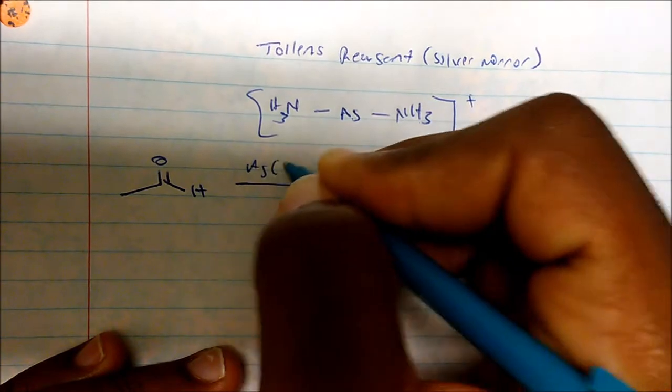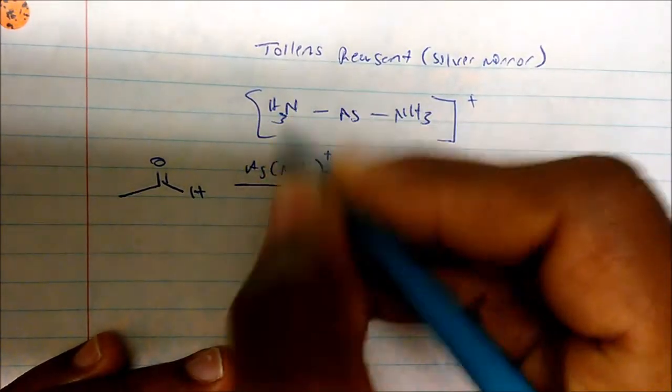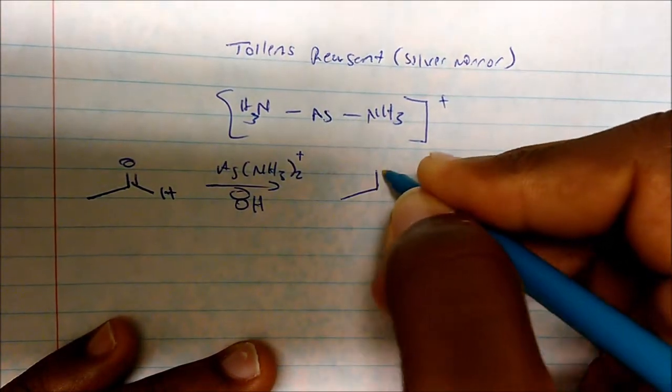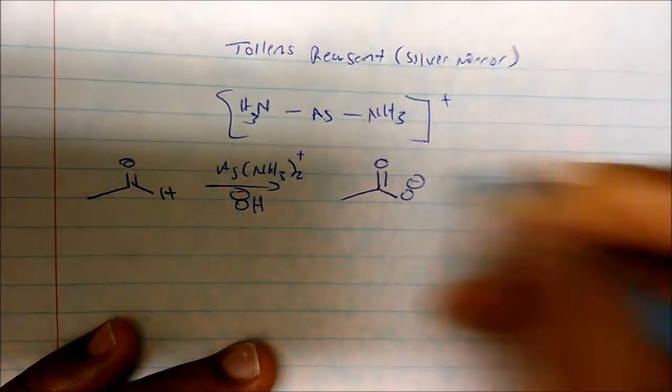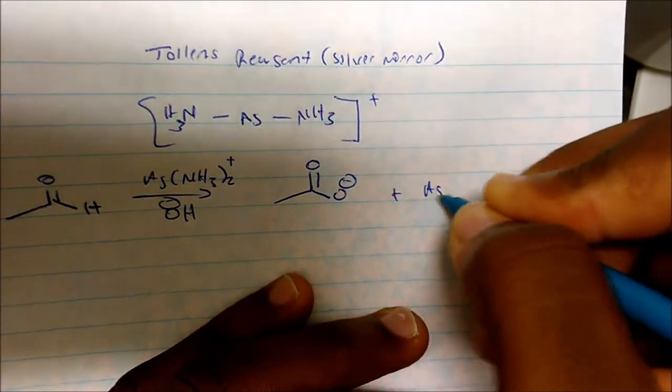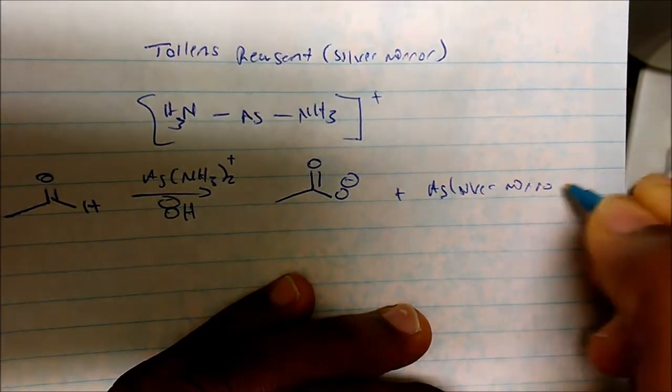So the general idea is that if I take an aldehyde like this and I add Ag(NH3)2+ in basic conditions, I will actually get the carboxylate ion plus silver, which gives you a silver mirror.